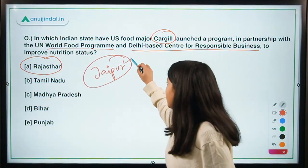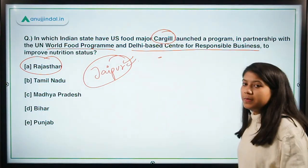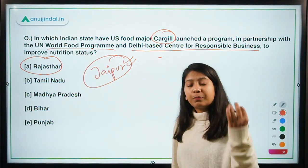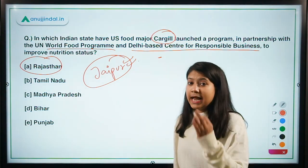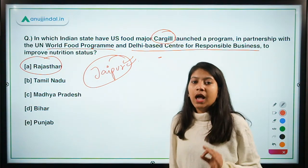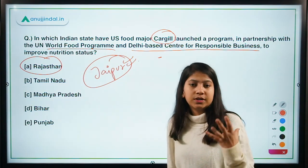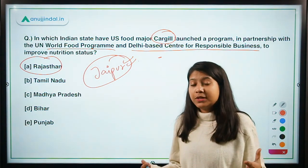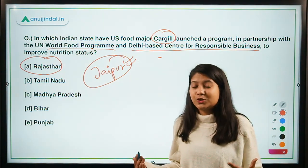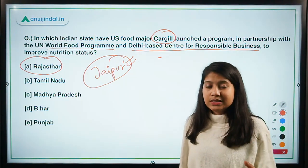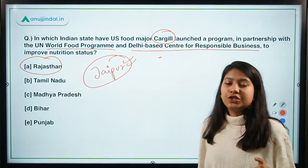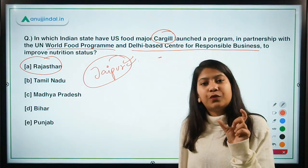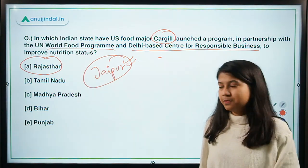Jaipur is the exact place where this program will be implemented. The purpose is to improve the nutritional status, and it is in line with Poshan Abhiyan, which is a very important scheme of the Government of India. My question for you: tell me the launcher of Poshan Abhiyan as well as its full form in the comment section.